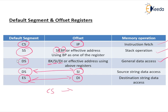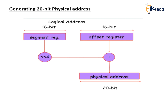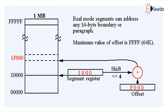For code segment, the offset address is in the instruction pointer. For stack segment, the offset is in the stack pointer or base pointer. For data segment, the offset is in the source index. For extra segment, the offset is in the destination index. This table is very, very important for calculating the physical address. For example, if segment register is 1000H and offset register is F200H, we append a zero: 10000H, then add F200H.